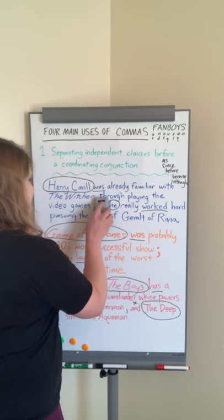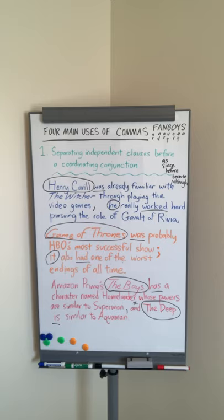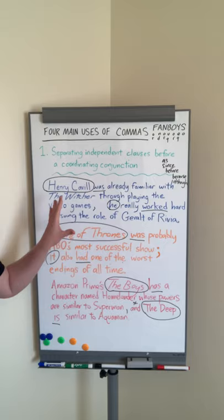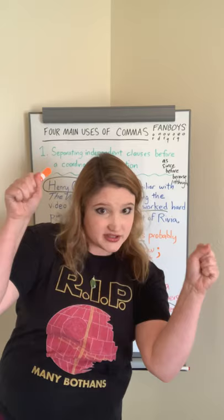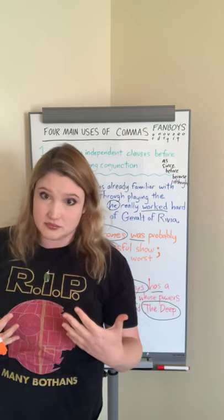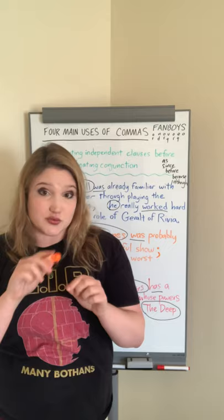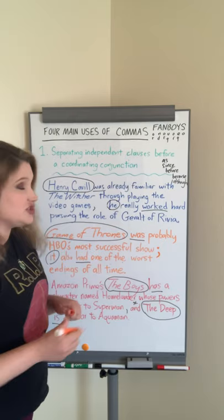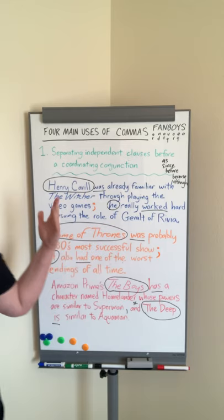Another problem I see is a very specific type of run-on — a comma splice — that looks like this: 'Henry Cavill was already familiar with The Witcher through playing the video games, he really worked hard pursuing the role of Geralt of Rivia.' The comma is not strong enough on its own to hold those two independent clauses together. A comma splice is a specific type of run-on where you just have the comma but not the coordinating conjunction. One way to fix this is just to make it a semicolon, which is strong enough to hold those two together by itself.